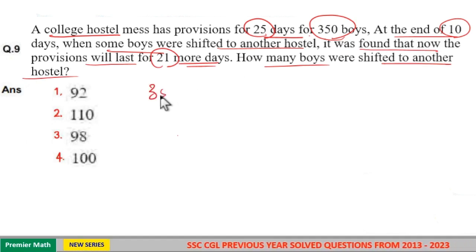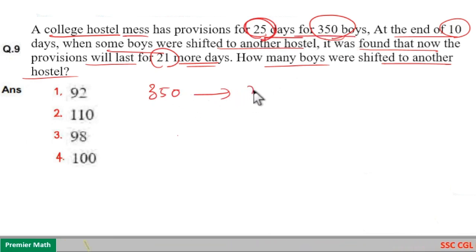Here, initially 350 boys and this mess has provision for 25 days for 350 boys. That is, for 350 boys, food will last for 25 days.